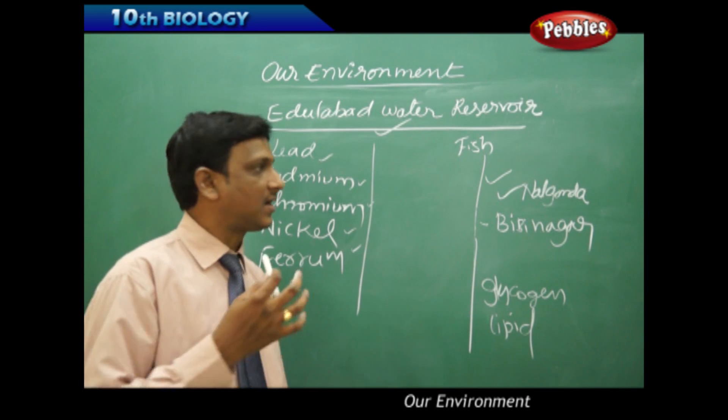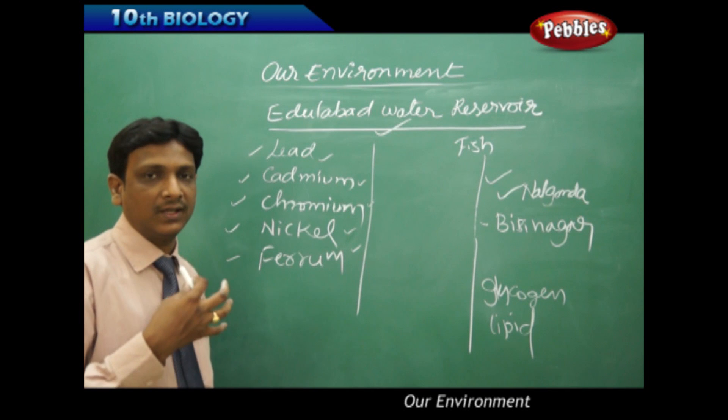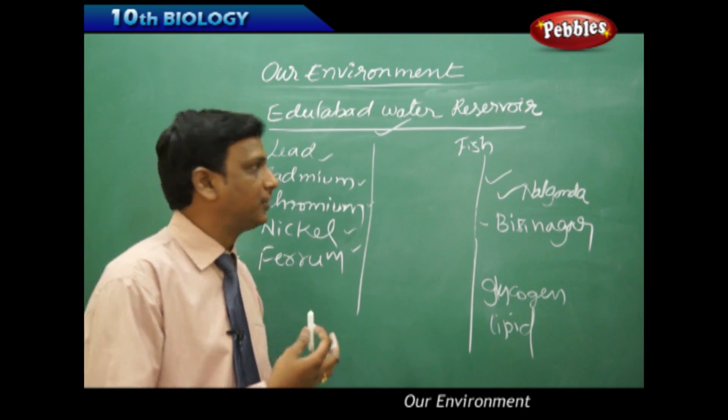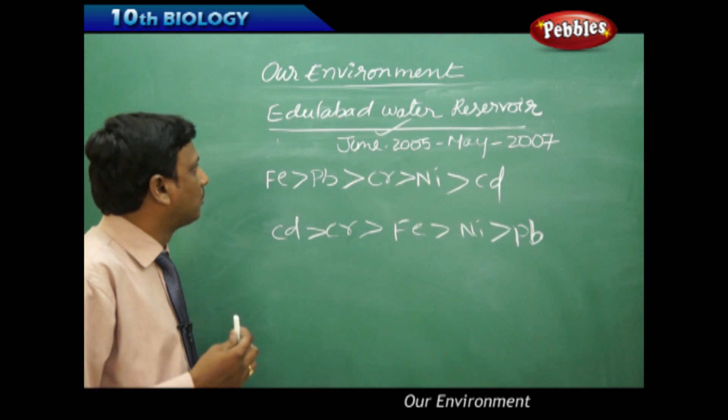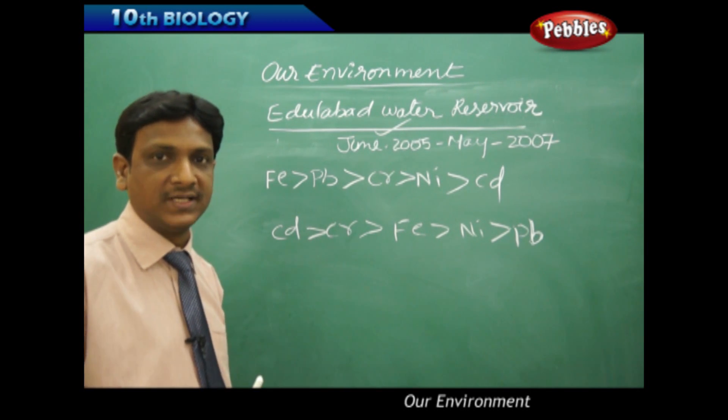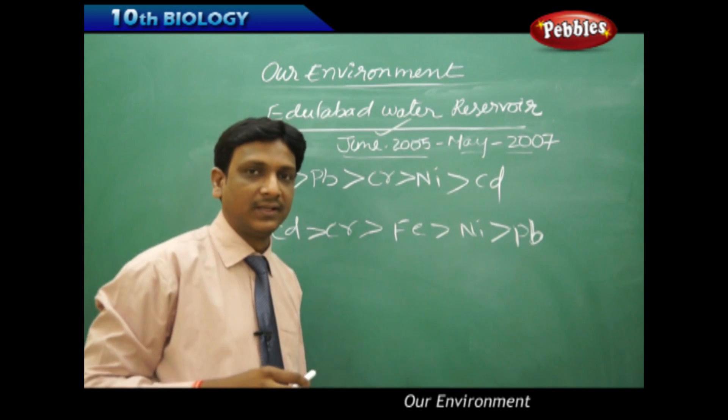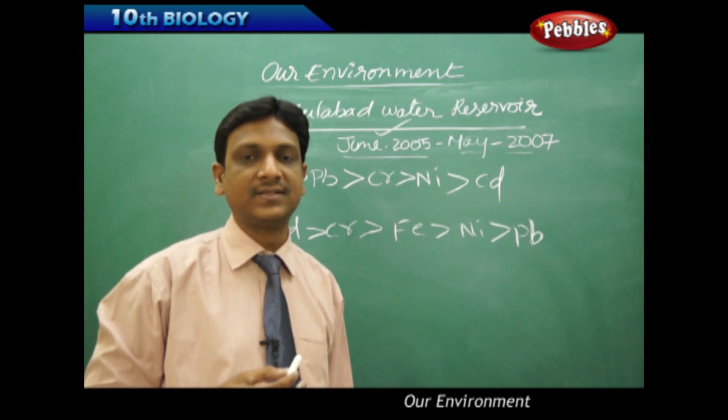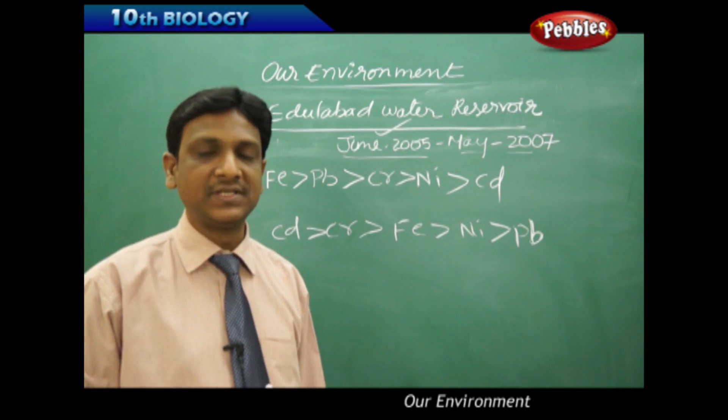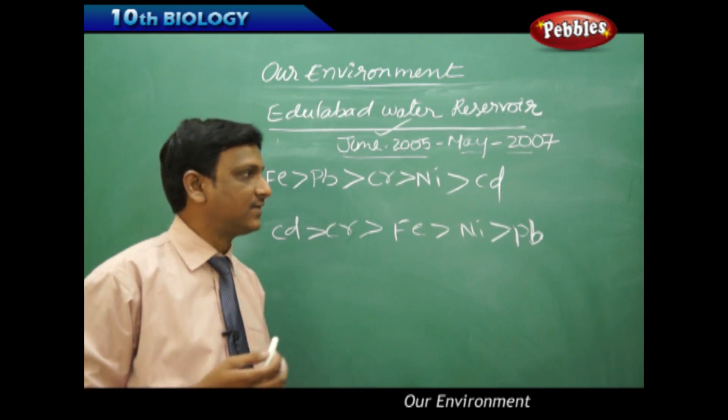They found that the fish grown in the Edulabad water reservoir has large amounts of these pollutants in their gills, liver and kidneys, and the amount of glycosin and lipids found are less in quantity when compared with the fish from Nalgonda and Bibi Nagar. The study of metal contaminants was conducted from June 2005 to May 2007 and samples were collected in three seasons: pre-monsoon, monsoon and post-monsoon.